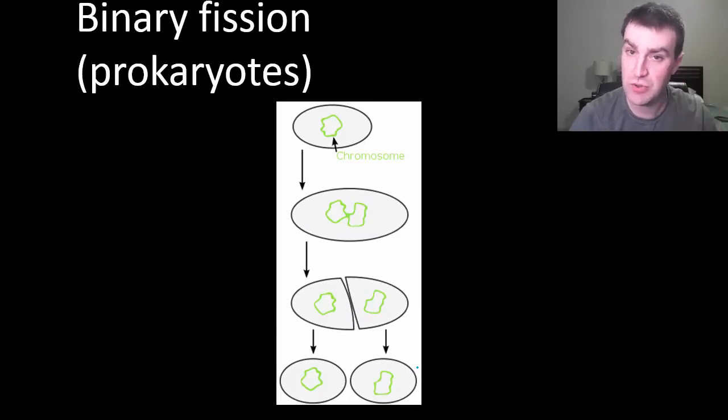And so we just kind of call that type of cell division binary fission. Binary, we're trying to make two. In fission we're really just splitting up the one cell into two cells.